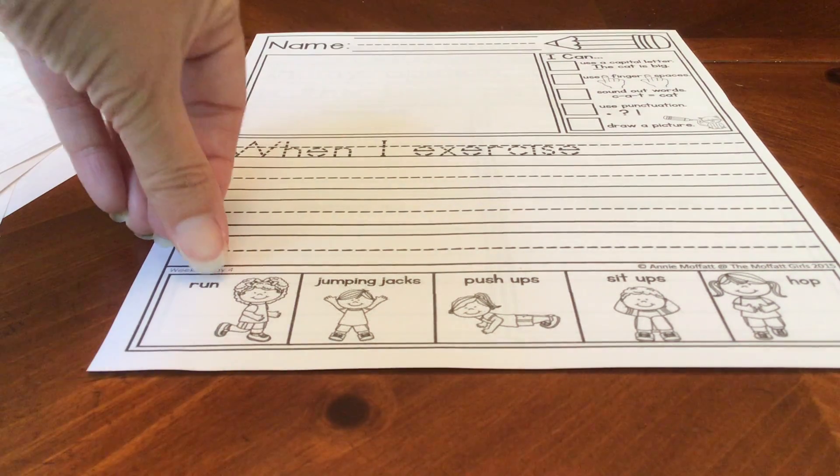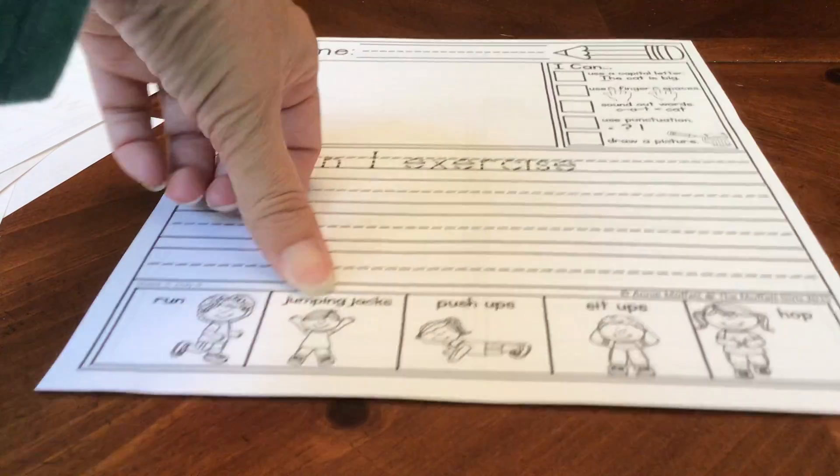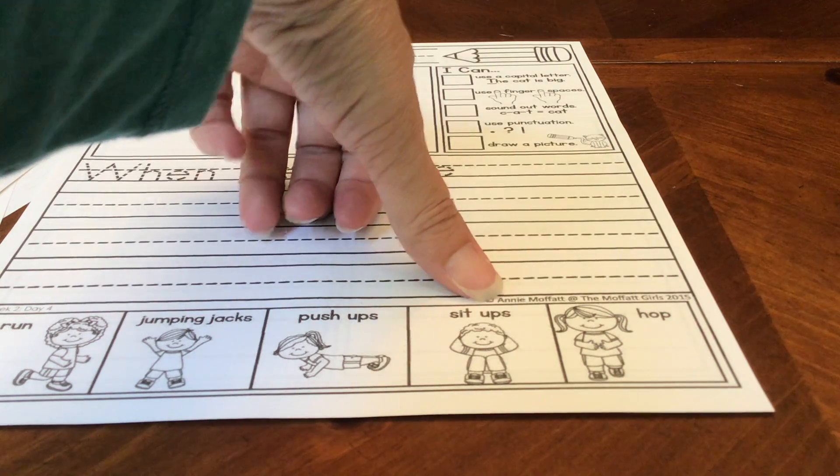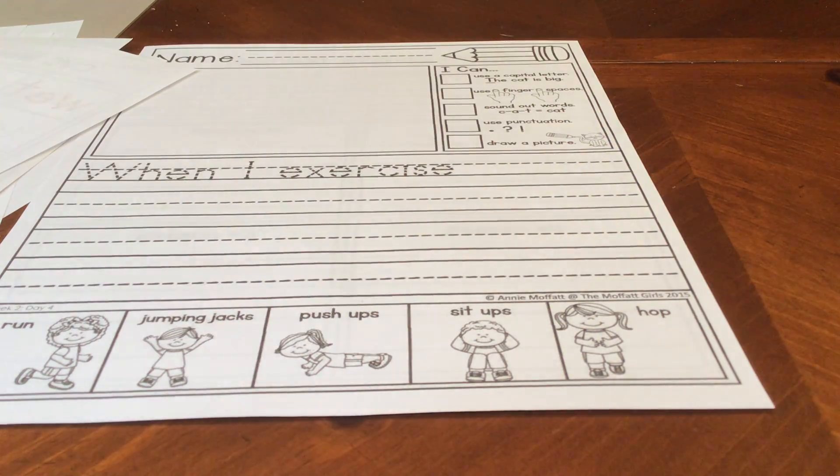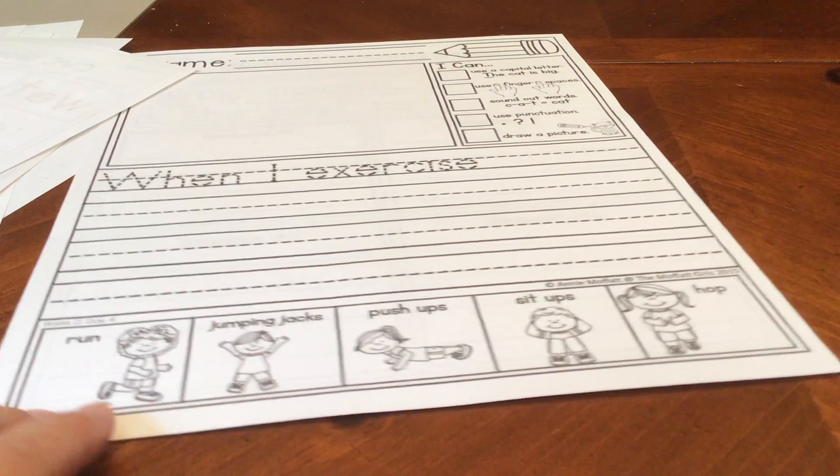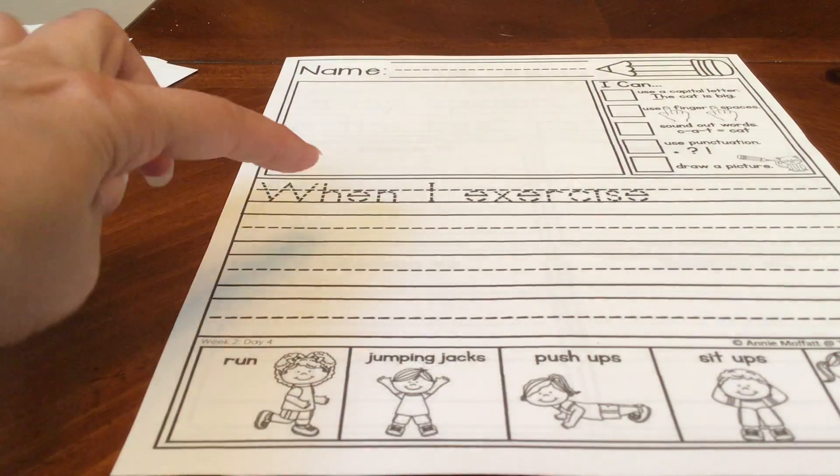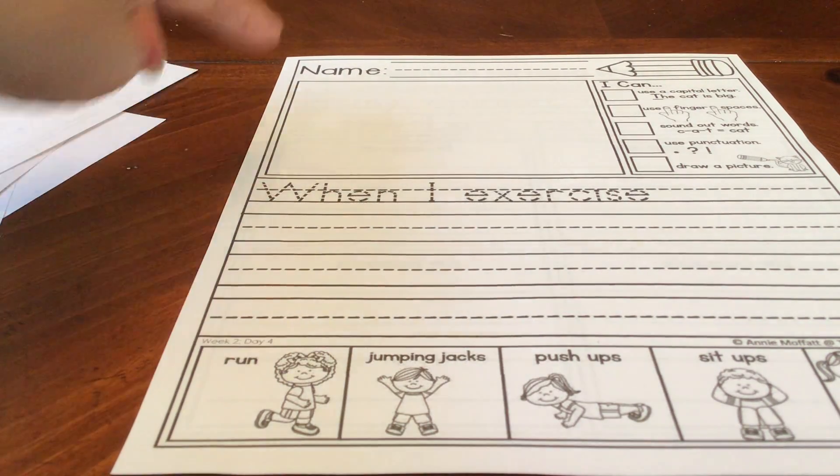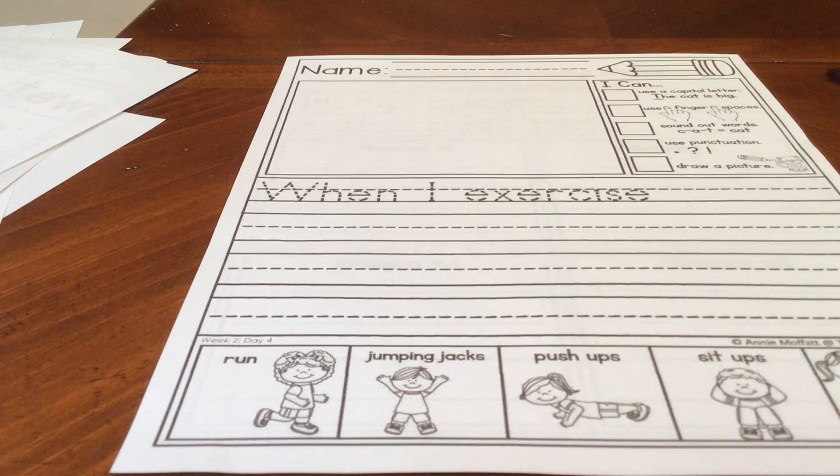Here are some words to help you. Jumping jacks, push-ups, sit-ups, and hop. You can use those if you want to. Or you can just use words of your own. Whatever you write your sentence is about, you need to draw a picture to match in the box.